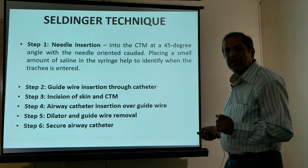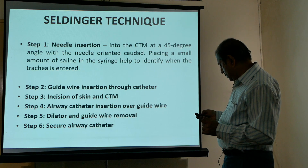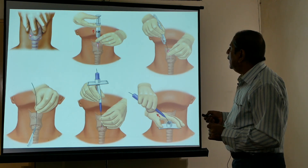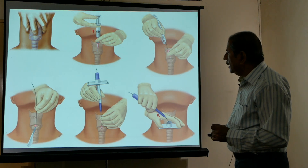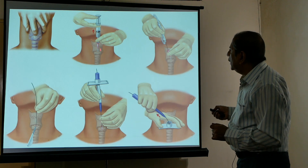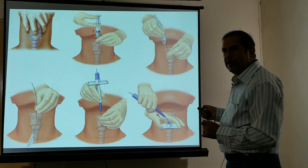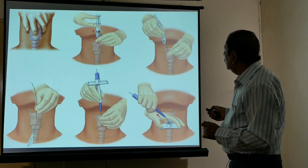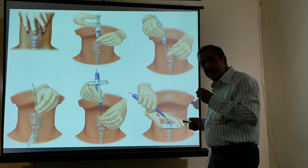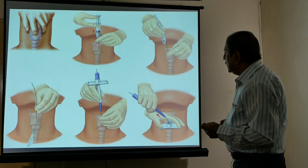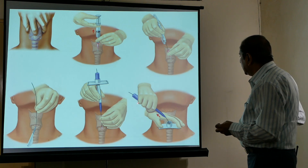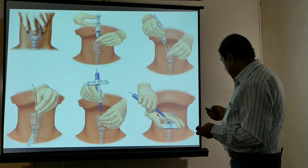In the Seldinger technique, the catheter is inserted over the guide wire and dilator, then the dilator and guide wire are removed to secure the airway. Pictorially: identify the membrane, make a stab, load a syringe with air and introduce the needle — free aspiration of air confirms correct placement — then slide the tracheal tube over the catheter and dilator, then remove the dilator.